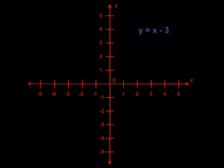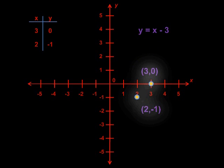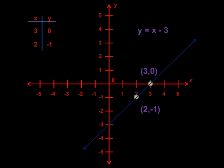Let's use y equals x minus 3. We can create a table for x and y, and randomly pick a number for x. I'll choose 3 first, then substitute this number into our equation and solve for y. When I'm done, y equals 0. We have our first point at 3 comma 0. But we need another point to create our line, so I'll pick 2. If I substitute 2 into our equation and solve, I get y equals negative 1. Now I have two points: one at 3 comma 0 and another at 2 comma negative 1. If I connect them, I get a line. Again, y equals x minus 3 describes this line using mathematics.